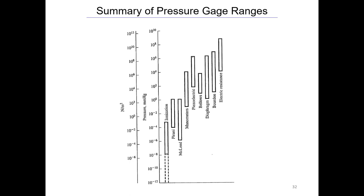This table compares the pressure ranges each device can measure — covering both vacuums and pressures above ambient. The ionization gauge clearly is the way to go if you need to measure a really high vacuum or very low pressure.